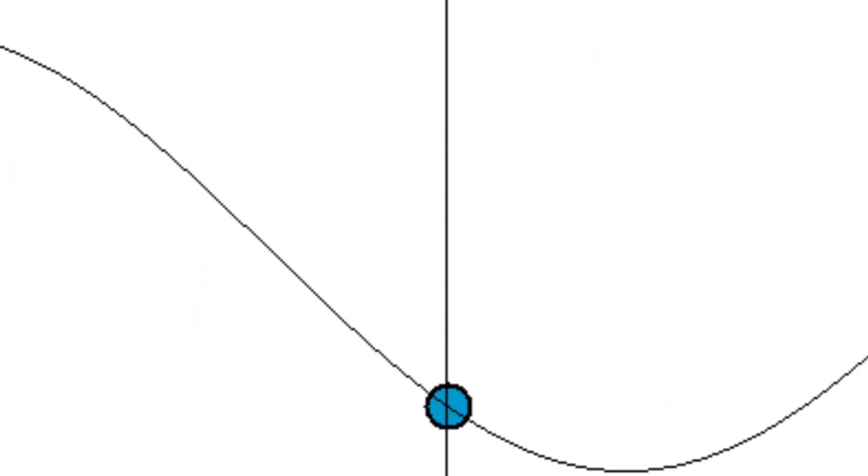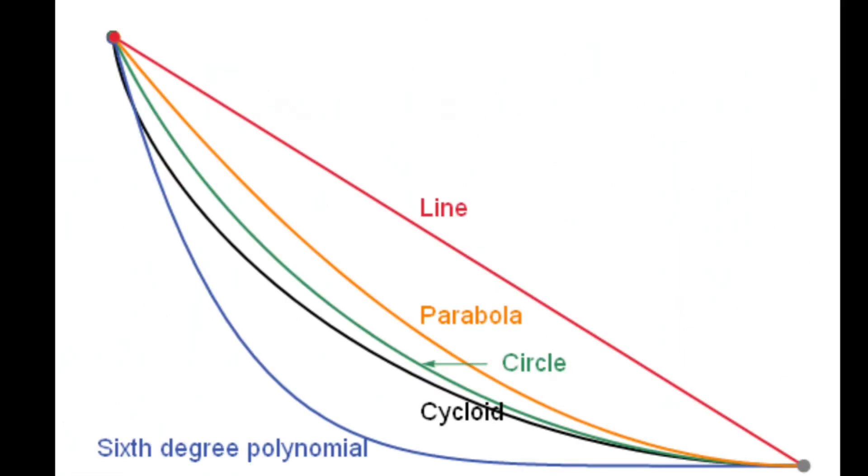What is the Principle of Least Action? At its core, the Principle of Least Action states that the path taken by a system between two states is the one that minimizes, or extremizes, a quantity called action.